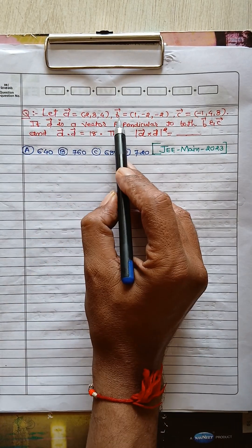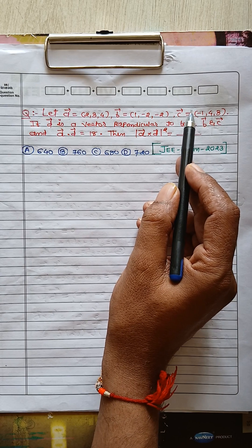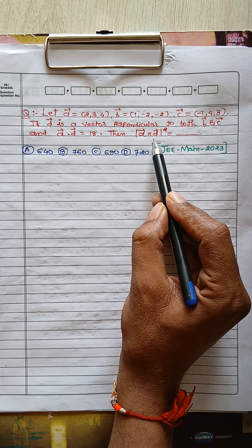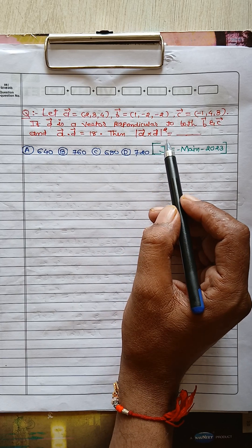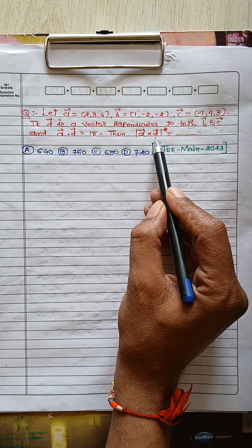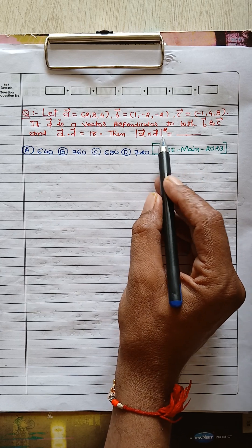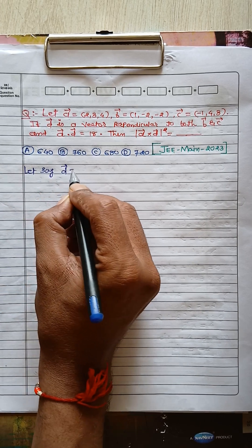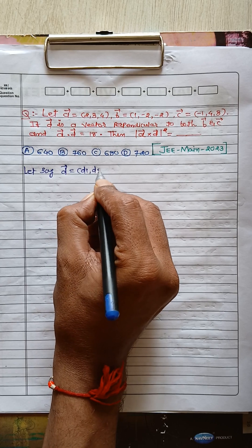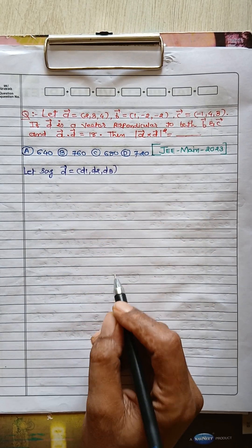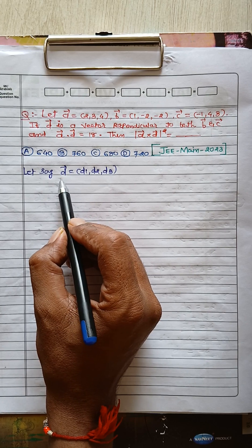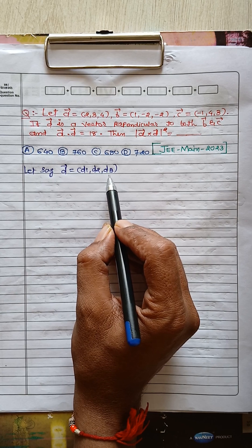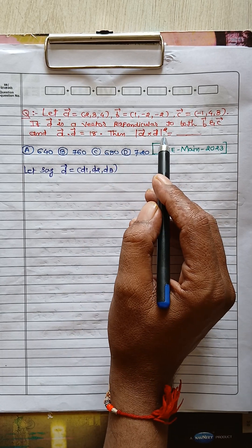Three vectors a, b, and c are given in the equation and we want to find the magnitude of vector a cross d, all squared. This means we need to find vector d. We assume vector d has components d1, d2, and d3. To find vector d, we need to find these three elements, and therefore three conditions are given in the equation.